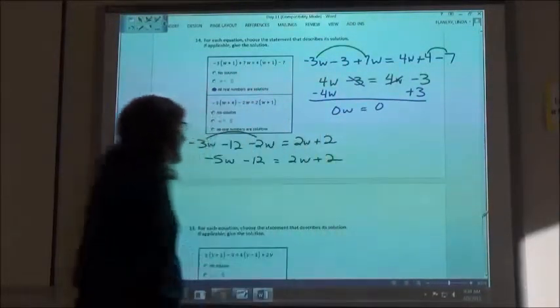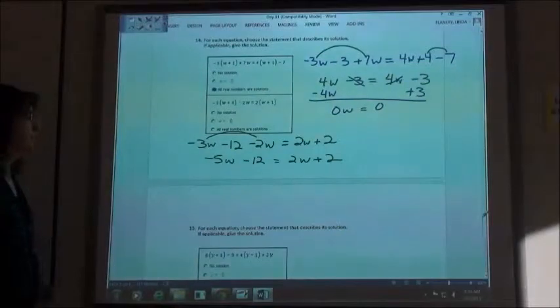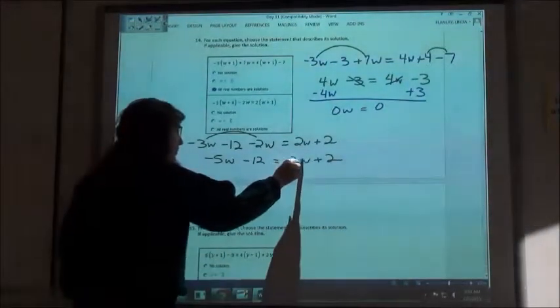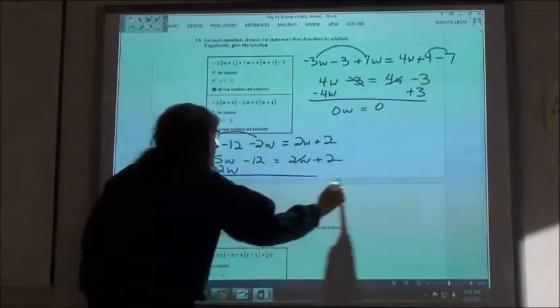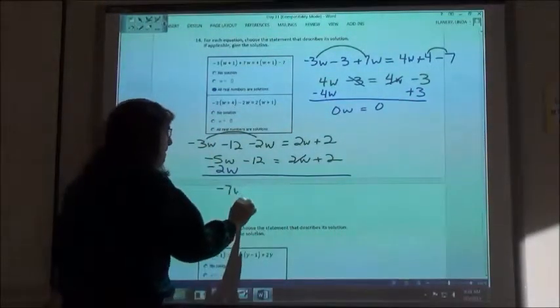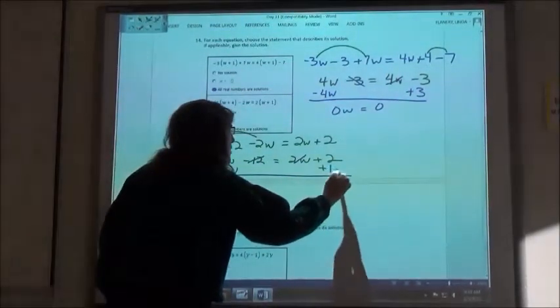So your negative 5w. Oh no. Your negative, your plus 2 will come over to a negative 2w. It would be 7w. The number of 12 will be a positive 12. Now I just want to check something here.